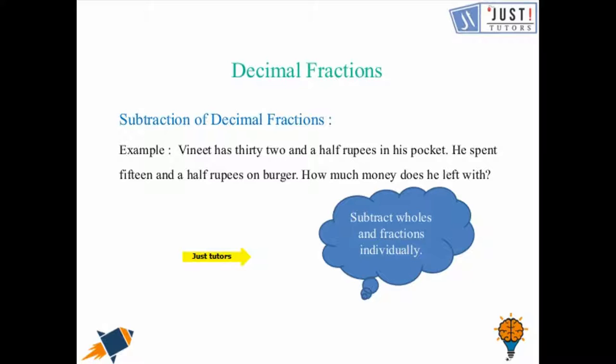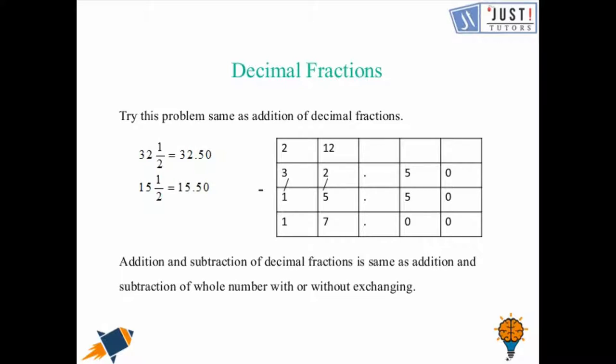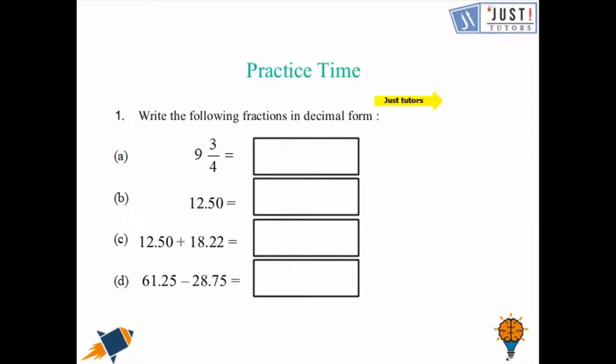Now, let's see how to subtract decimal fractions. Once again, we have an example. Vineet has 32 and a half rupees in his pocket. He spent 15 and a half rupees on burger. How much money does he left with? Once again, we can write these fractions in decimal forms and quickly subtract them. 32 and a half is 32.50, 15 and a half is 15.50. Here we can subtract 15.50 from 32.50. In similar way, we were subtracting whole numbers with exchanging. The answer we will get will be 17 rupees. And one more time, keep in your mind that we need to line up the decimal places correctly.